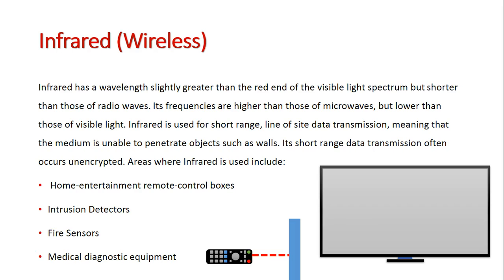That's the main downfall of infrared, but it's simple, cheap and easy to set up. Many things still use infrared technology — home entertainment, intrusion detectors, fire detectors, and medical diagnostic equipment where we are at close range with direct line of sight between the sender and receiver. I hope this gives you a better understanding of wireless communication mediums — microwave, satellite, radio, and infrared — and where and when they're used throughout communication systems.